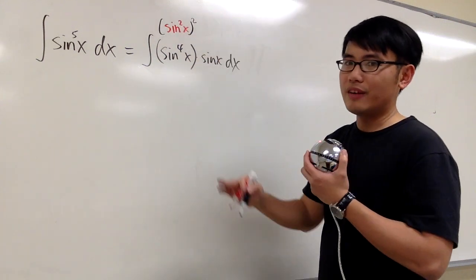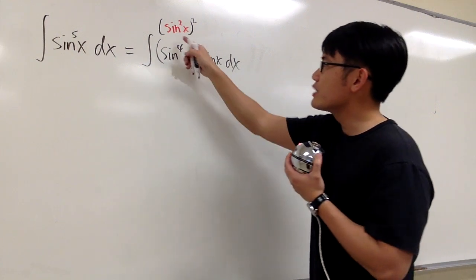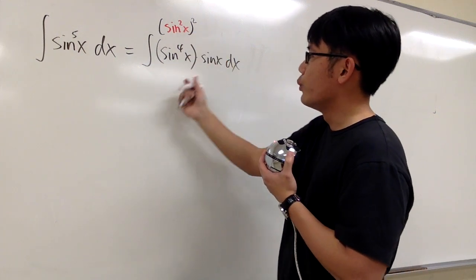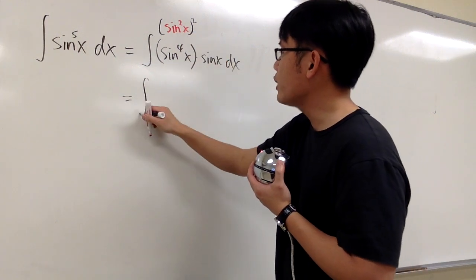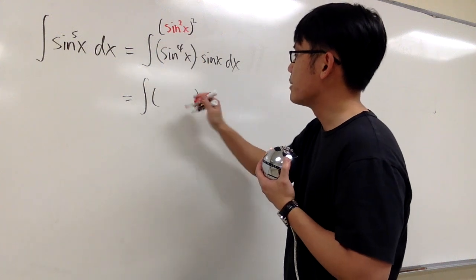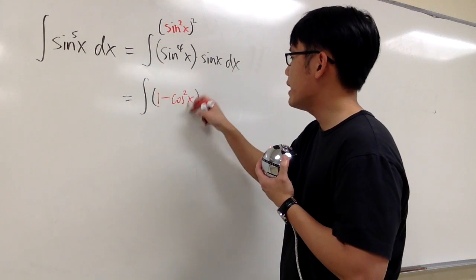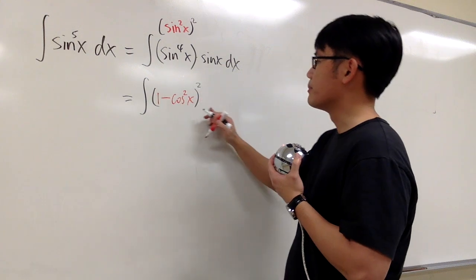And so far, so good, because we don't have any square root or things like that. And then guess what? We have the sin squared x. We can immediately write this as the integral, and the inside becomes 1 minus cosine squared x. And then that's still raised to the 2nd power.